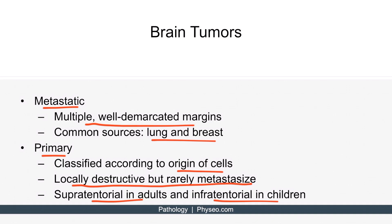The supratentorial region, as the name implies, is the area located above the tentorium cerebelli, which is an extension of the dura mater that separates the cerebellum from the inferior portion of the occipital lobes. The infratentorial region is the area located below the tentorium cerebelli.